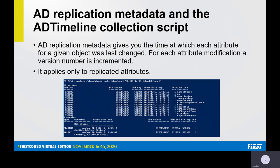Now let's focus on the AD Timeline collection script. The script retrieves Active Directory data itself — the objects and attribute values — but also AD replication metadata, which gives you the time at which each attribute for a given object was last changed. As a consequence, the modifications you retrieve are partial. If the same attribute on the same object is modified multiple times, you only have the information of the last modification, but for every modification the version number is incremented. Replication metadata does not apply to non-replicated attributes such as bad password count attributes. Replication metadata can be retrieved using PowerShell, which is what the AD Timeline collection script uses, but it can also be retrieved using the repadmin command line tool.